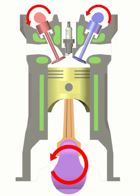This stroke of the piston begins at top dead center and ends at bottom dead center. In this stroke the intake valve must be in the open position while the piston pulls an air-fuel mixture into the cylinder by producing vacuum pressure through its downward motion. The piston is moving down as air is being sucked in by the downward motion against the piston.